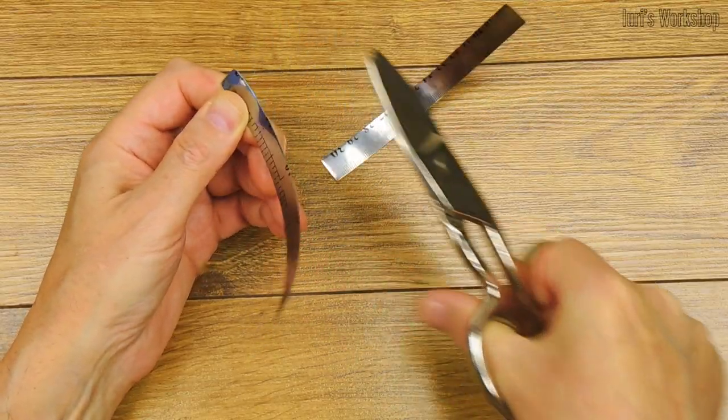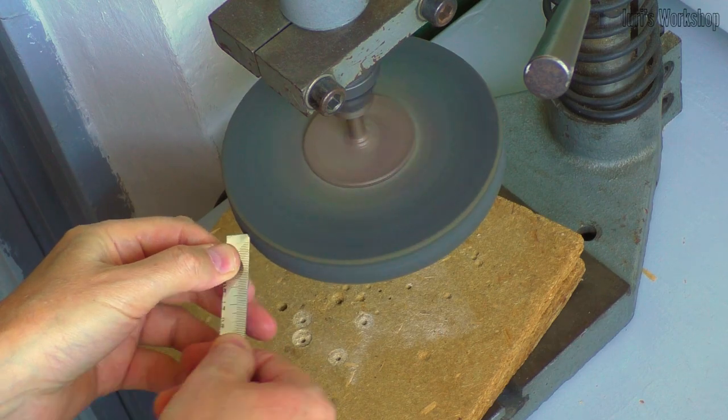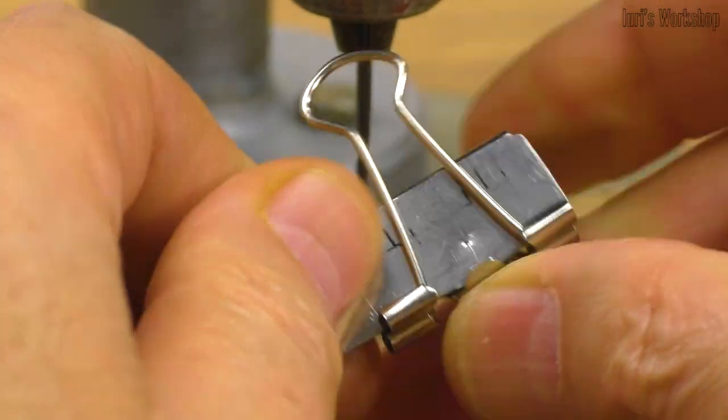I made this strip from a metal ruler bought at a stationary store. It will allow us to fix the rigid body of the gadget on the belt of the trousers, which has the shape of an arc.